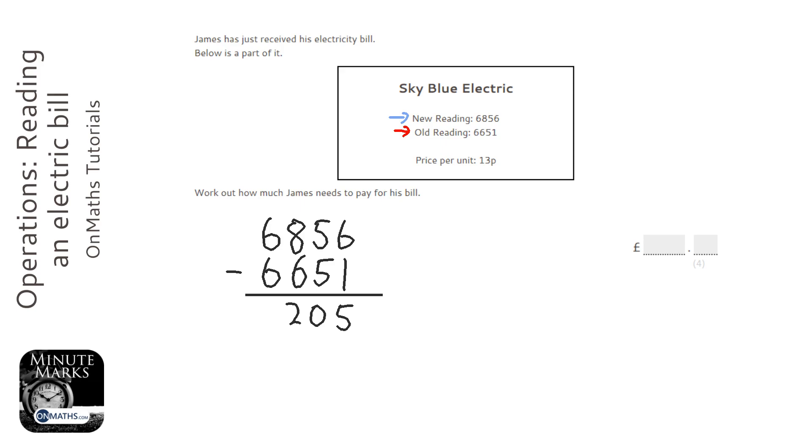Now it says the price per unit is 13 pence, so what we need to do is we've got 205 units and they're 13 pence each. So the total cost of the bill is 205 times 13.